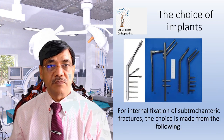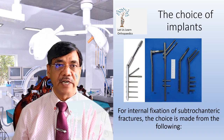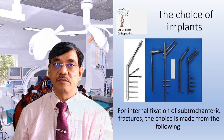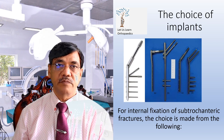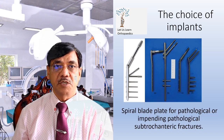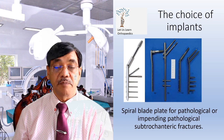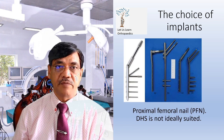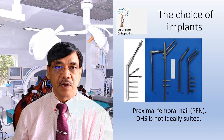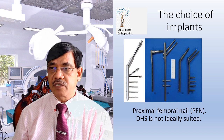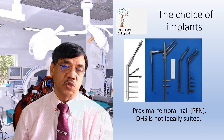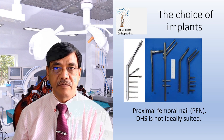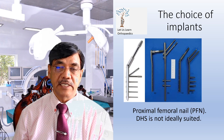For the internal fixation of subtrochanteric fractures, the choice is made from several implants. The spiral blade plate is often used for pathological or impending pathological subtrochanteric fractures. Proximal femoral nail (PFN) is another implant of choice. DHS is not ideally suited, but sometimes a barrel plate with a longer plate size can be used.